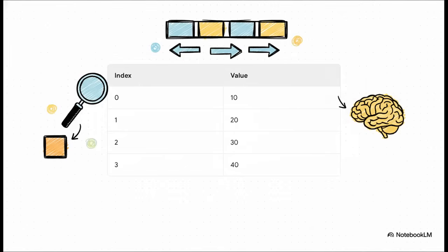And this table is the perfect picture of our row of boxes. The index is just the number on the front of the box, and the value is whatever we stored inside. So box number zero has the value 10, box one has 20, and it just keeps going.